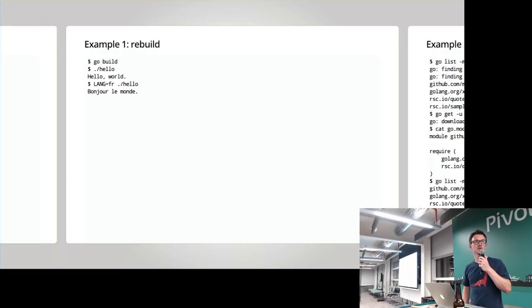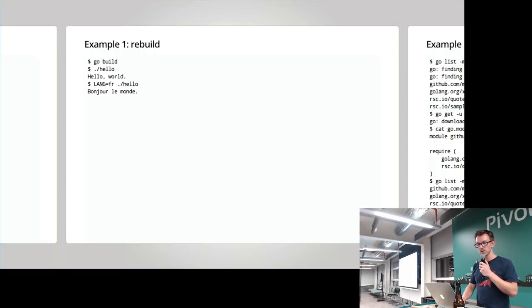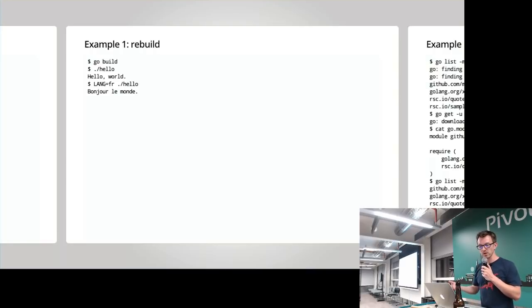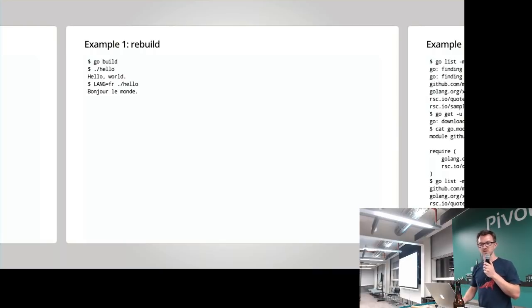We rerun hello again to confirm it's still behaving the same way, then switch into French and do a quick test as well. Bonjour. This explains why we're using XText as well — the quote module depends on a package called Sampler, and Sampler uses XText for language matching.